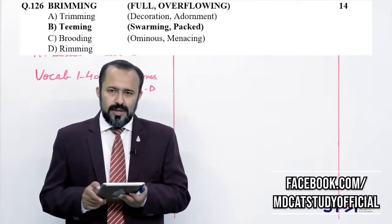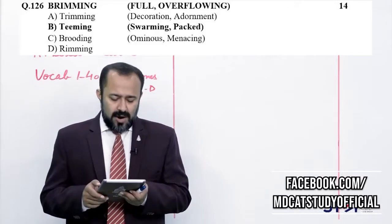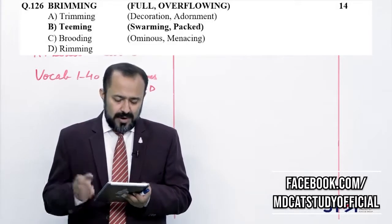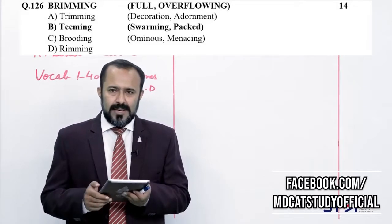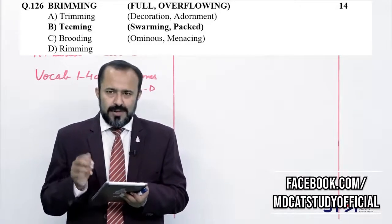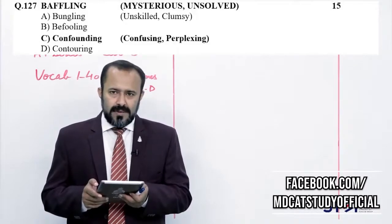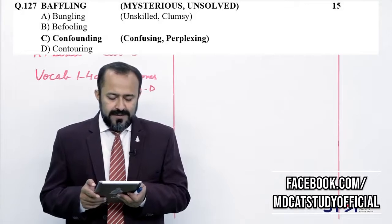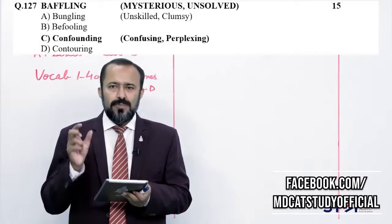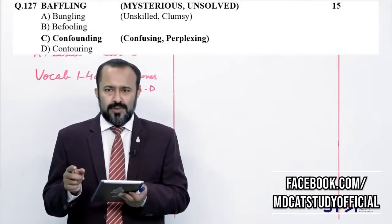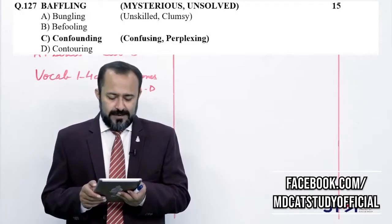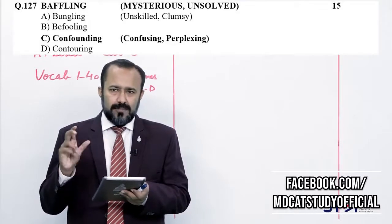Question: baffling کا synonym — کسی کو confound کرنے والا، confuse کرنے والا۔ Alpha نہیں ہے۔ Bungling — ایک کام خراب کر دینا۔ Beta (fooling) — کسی کو بے وقوف بنانا — لیکن بے وقوف بنا کے ضروری نہیں کہ baffling situation ہو؛ بندہ آرام سے بے وقوف بن گیا، confound نہیں ہوا، baffle نہیں ہوا۔ تو baffling جو ہے وہ confounding ہے — Charlie۔ Contouring — نقش و نگار کو واضح کرنا — answer نہیں۔